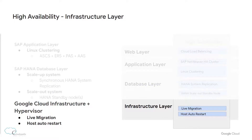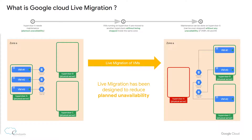Let's first start with the infrastructure layer. Google Cloud infrastructure and hypervisor provide live migration and host auto-restart features, which will keep VMs running in case of a host system event like a software update, hardware update, or maintenance. Compute Engine live migration achieves that by migrating the VM instance to another host in the same zone without being stopped. For example, hypervisors A, B, and C are three different hosts in the same zone, and in case of required maintenance of hypervisor A — where VMs 1 to 3 are hosted — these VMs can be migrated to hypervisors B and C without any unavailability.